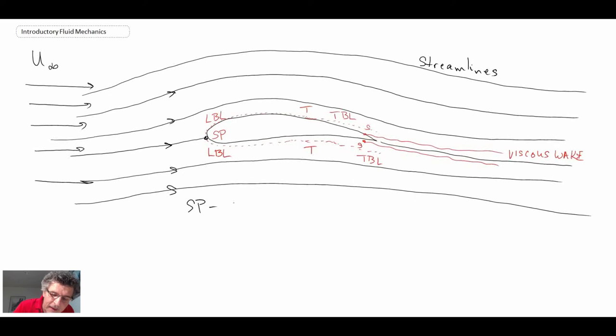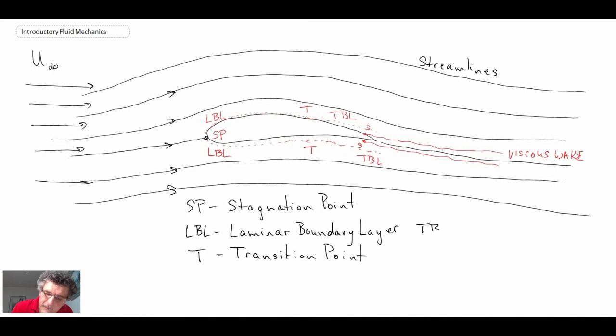And so to begin with, the acronyms we have: SP refers to stagnation point. LBL refers to laminar boundary layer. T refers to the transition point. TBL refers to the turbulent boundary layer.